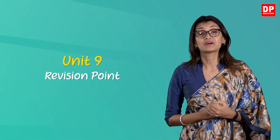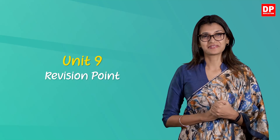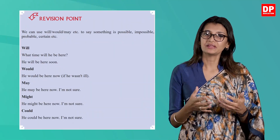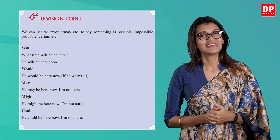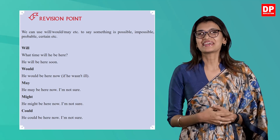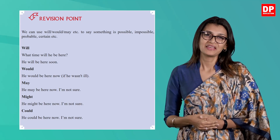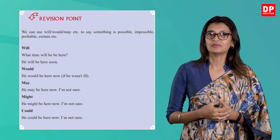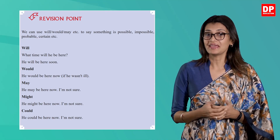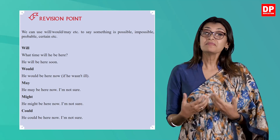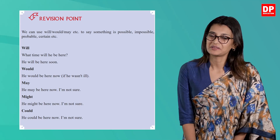Let's now look at Unit 9, provision point on page 112. We are introduced to the modal verbs will, would, may, might, and could. Let's read it together and discuss what has been stated. We can use will, would, may, etc. to say something is possible, impossible, and probable.